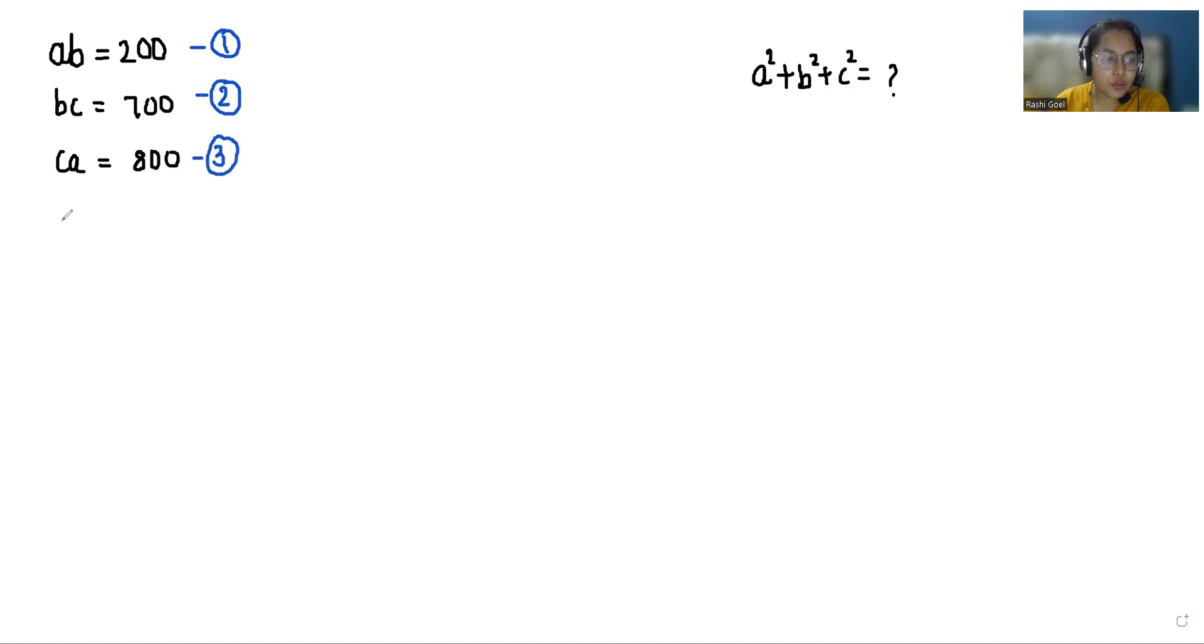So first I'm going to find the value of a, b, c respectively squared with the help of these three equations. If I multiply equation one with equation three and divide by equation two, I get equation one is ab times equation three is ca divided by equation two that is bc. If I cancel this, what is left is a², so the value of a² is ab times ca divided by bc.